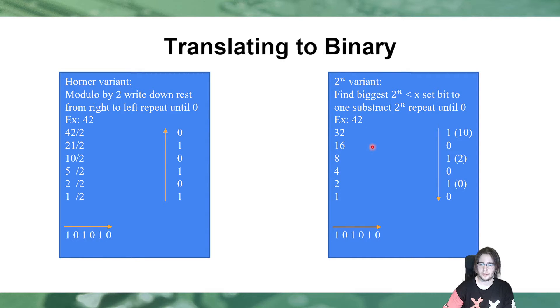So, 42, the biggest number, the biggest 2 to the power of something, is 32. That's the biggest one that fits in. So, we set the 32 bit to 1, and we subtract 32 minus 42, we get 10. So, after that, 16 doesn't fit, so we set this bit to 0, 8 fits, so we set 8 to 1, the 8 bit to 1, we subtract 8 from 10, we get 2.